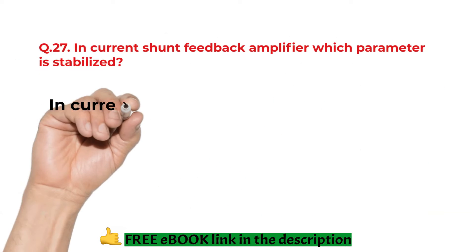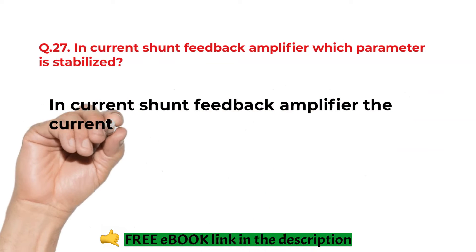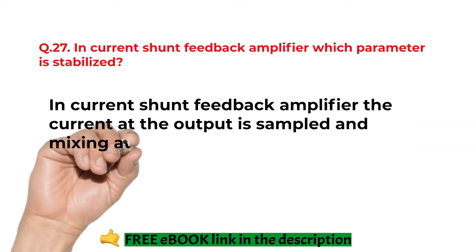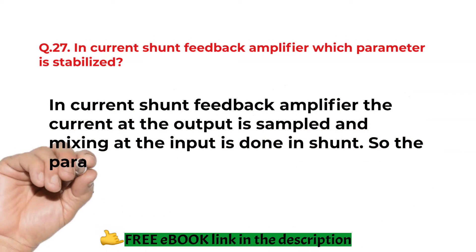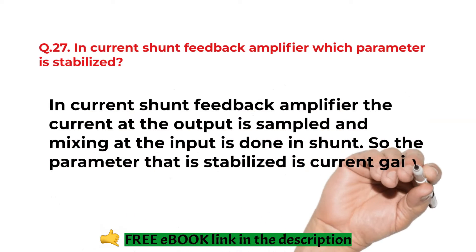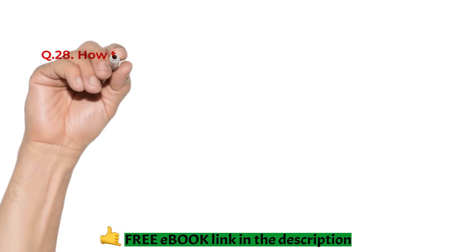In current shunt feedback amplifier which parameter is stabilized? In current shunt feedback amplifier, the current at the output is sampled and the mixing at the input is done is shunt. So, the parameter that is stabilized is current gain.